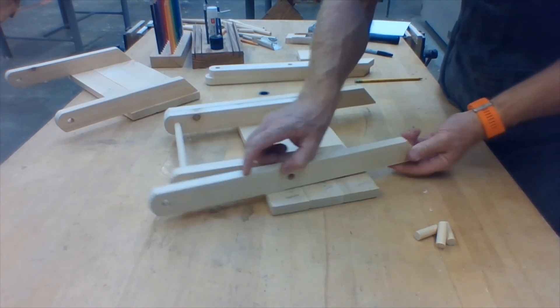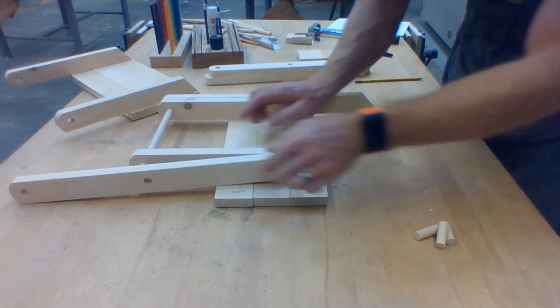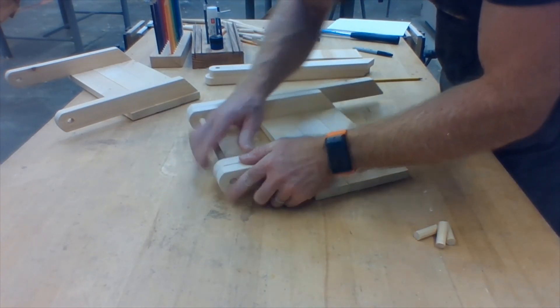Repeat the process for the other side. Again, checking the angle of the leg matches the angle of the seat support and connect those two together.